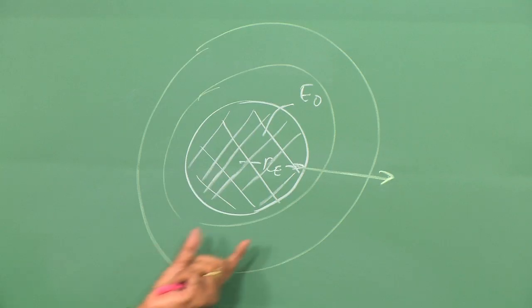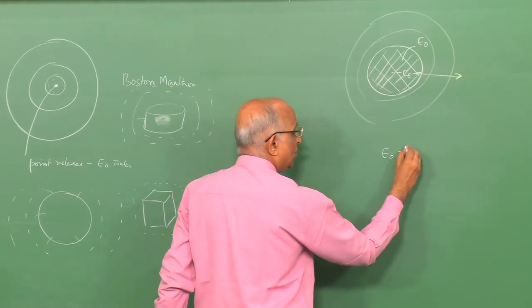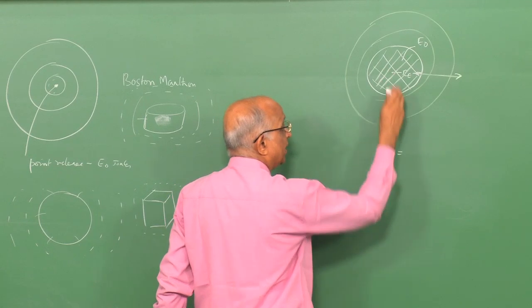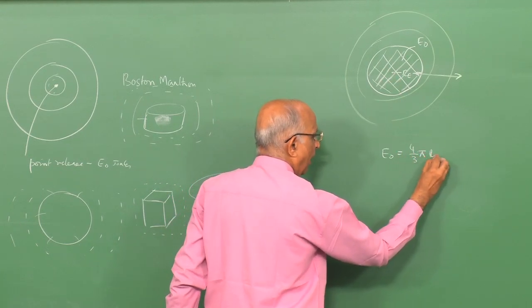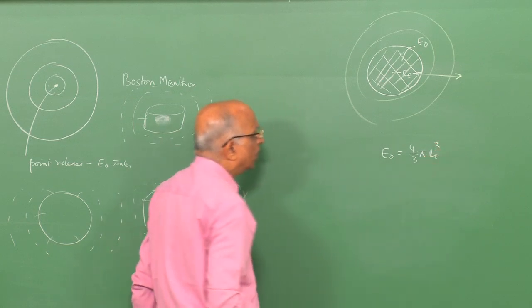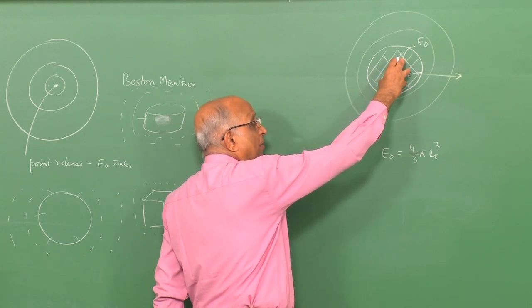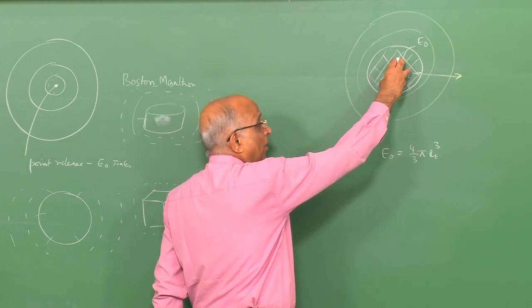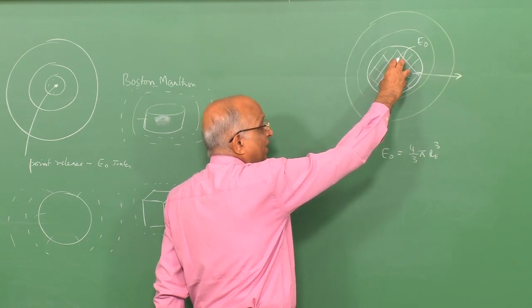We simplify by considering a spherical volume. Let the radius of the sphere be Re and energy gets liberated within this volume; this sphere then ruptures and a spherical blast wave moves out from it. The question is: can we say something about how the explosion behaves in both near and far field for this finite volume?